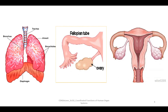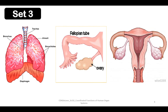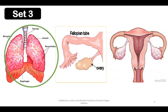Let's go to set number three. We have the lungs, fallopian tube, and the female reproductive system as a whole. Which organ does not belong to the group? The answer is lungs, because it is part of the respiratory system.